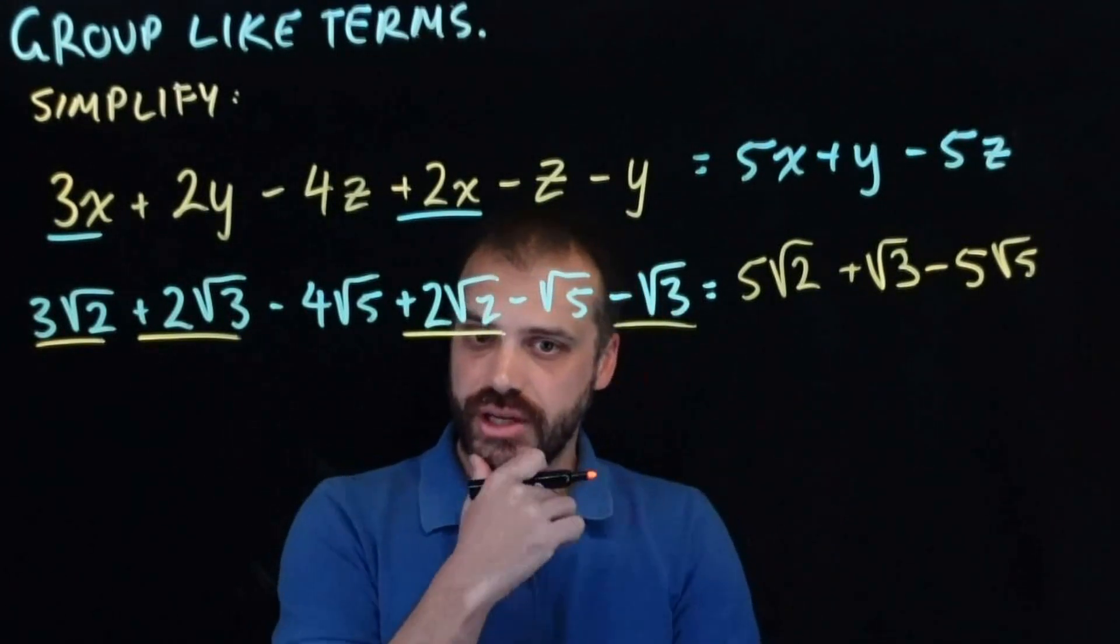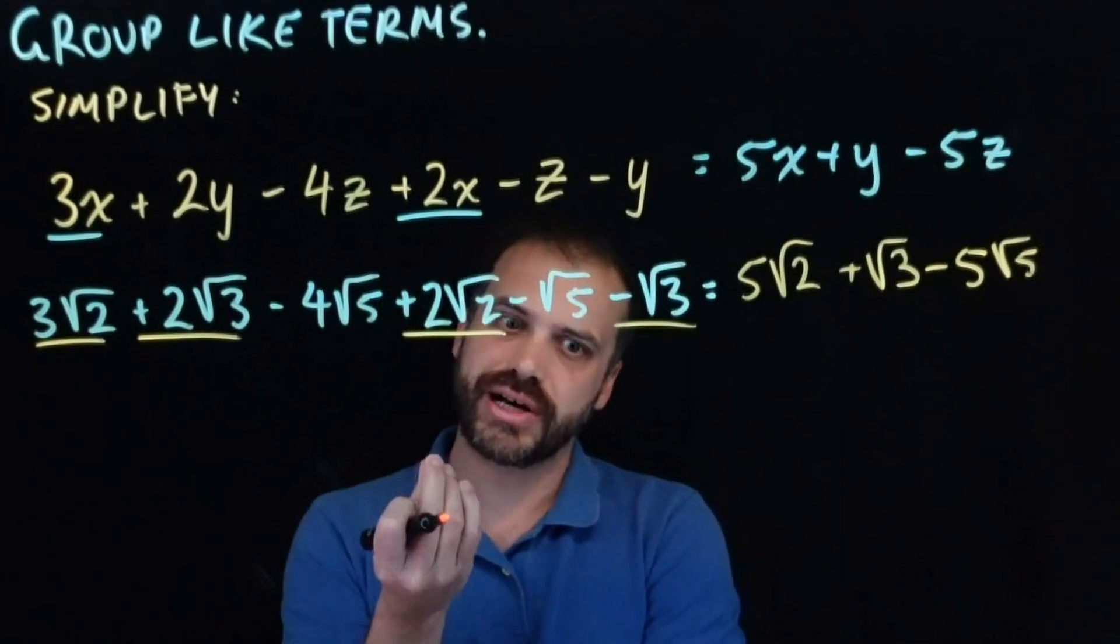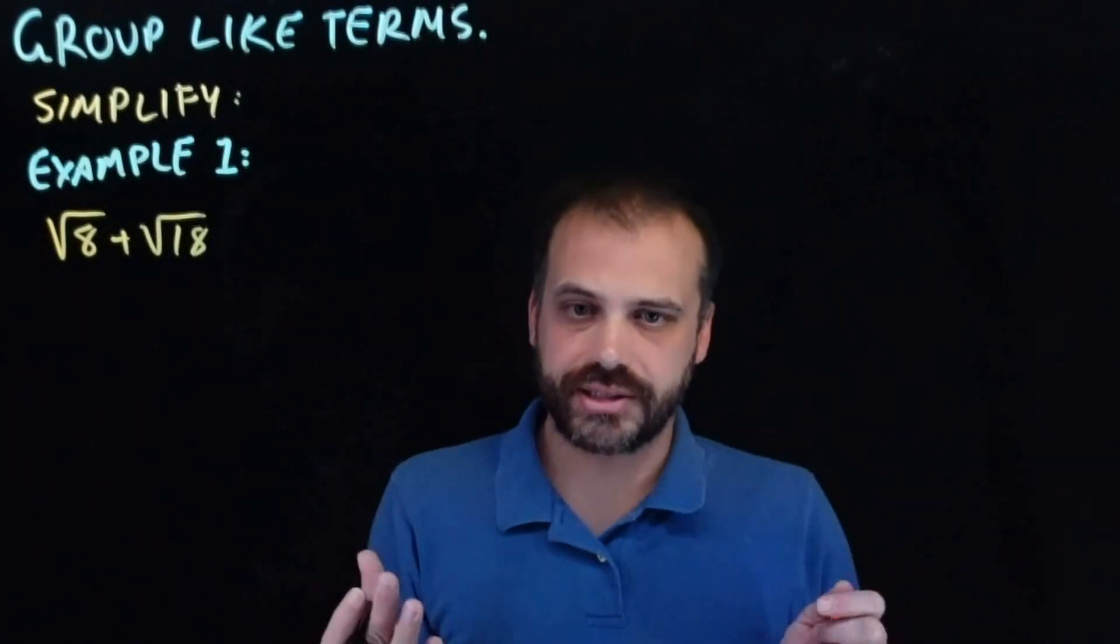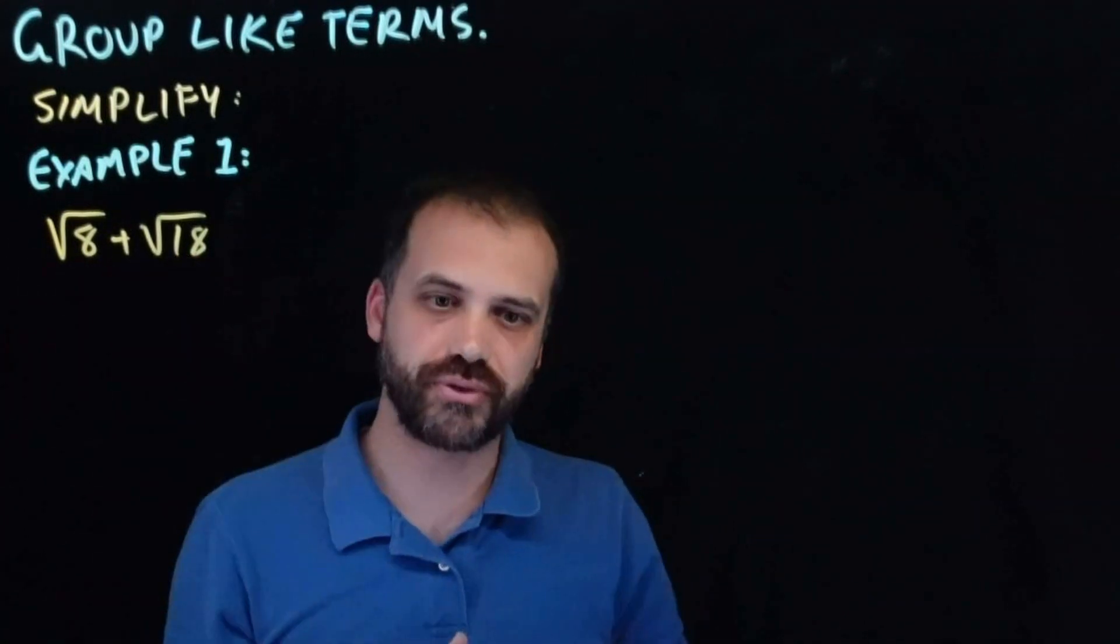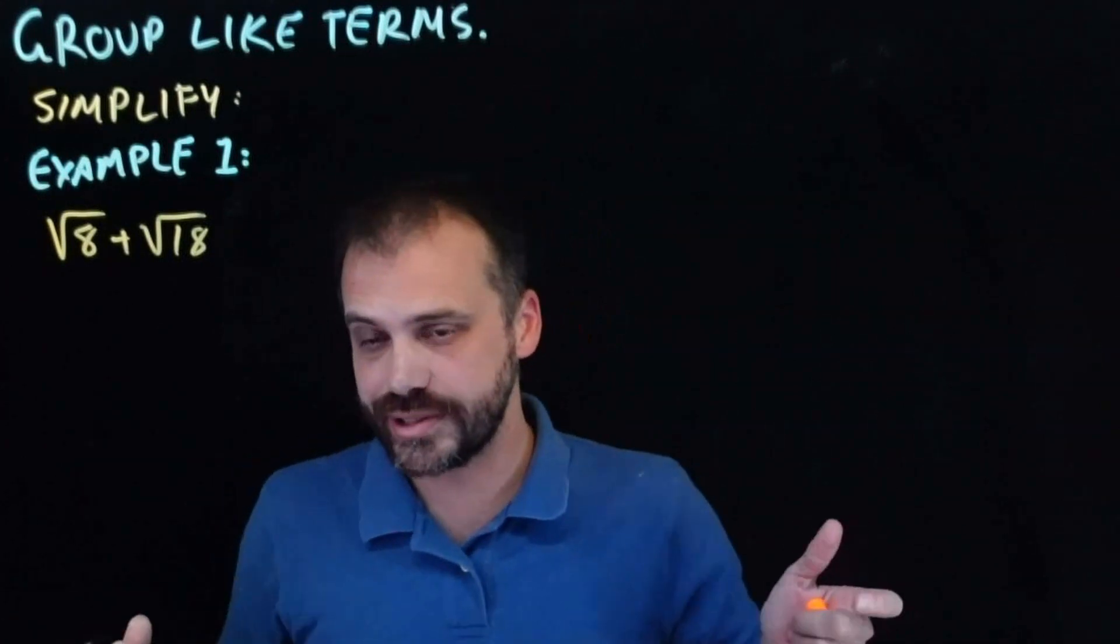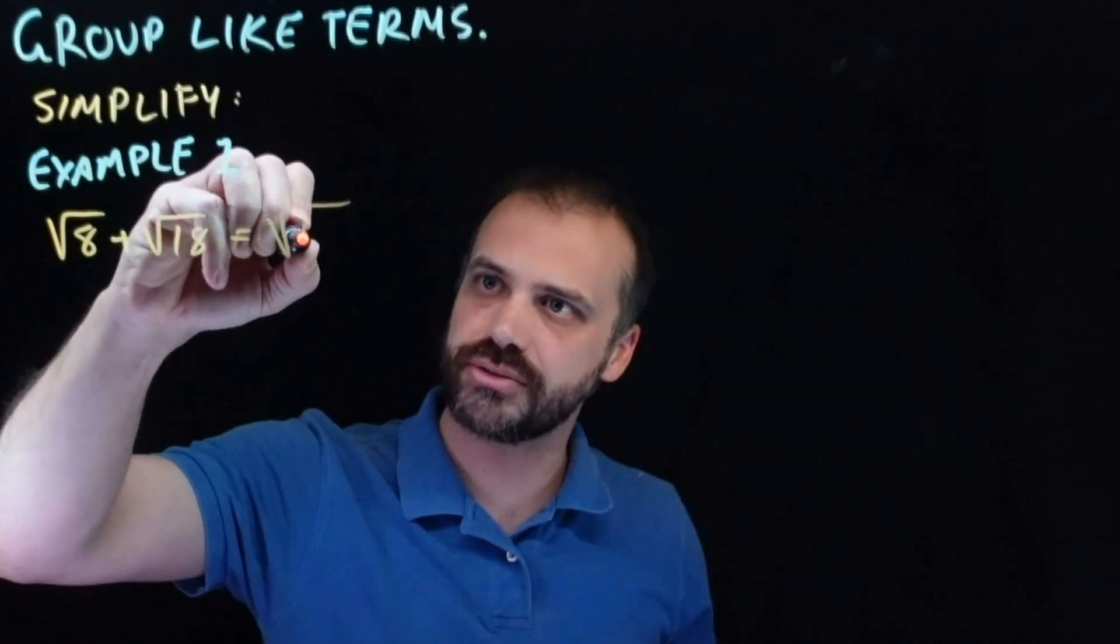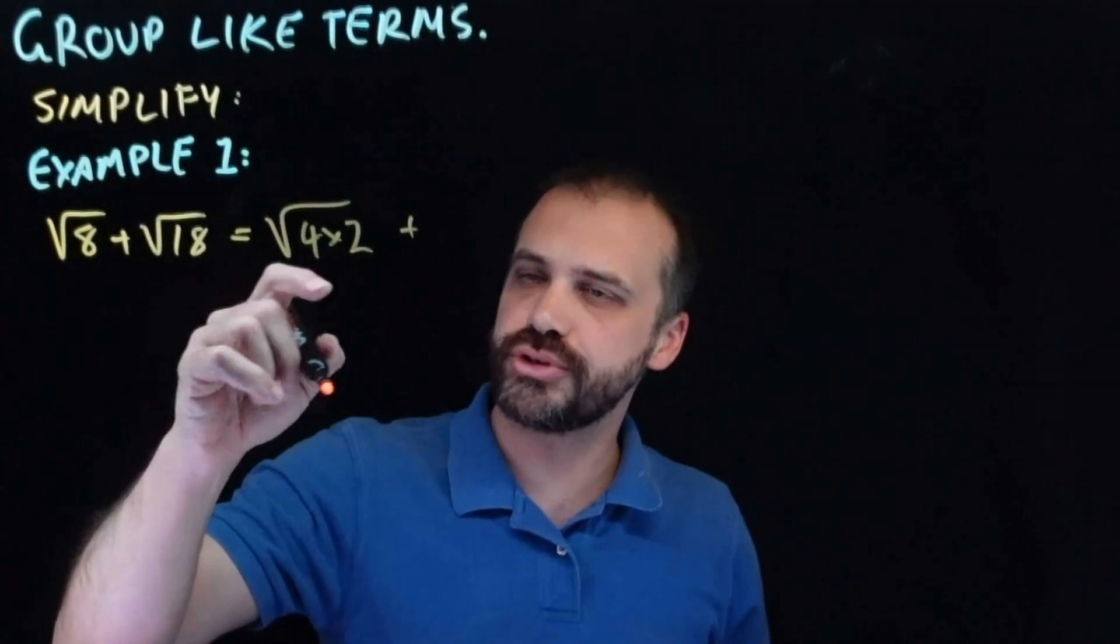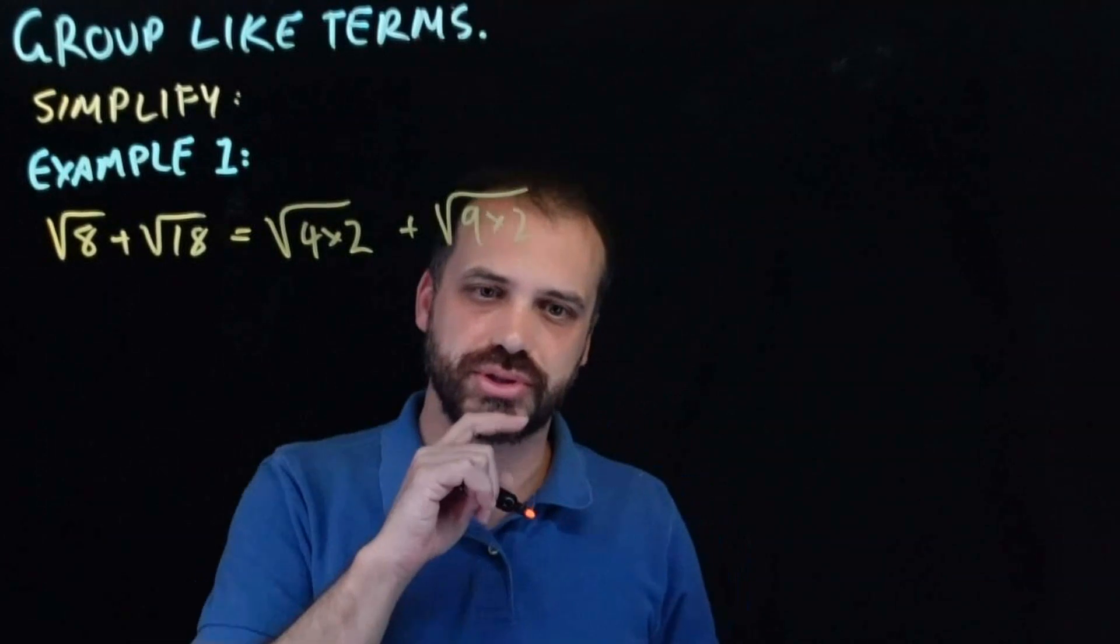Now that could be the end of the video, but surds do tend to sort of disguise themselves a little. So here we have root 8 plus root 18, and they don't look like like terms. There's a different thing here, there's a different thing here, but they are. They are like terms, they're just in disguise. So how do I know that? Root 8 is the same as root 4 times 2, and root 18 is the same as root 9 times 2.